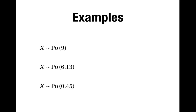Let's look at some examples to finish with. We can use the rules that we've worked out to answer these extremely easily. First, suppose that x has the Poisson distribution with parameter 9. This is a whole number, and when lambda is a whole number, we'll have a bimodal distribution where the modes are lambda minus 1 and lambda, so the two modes are 8 and 9. Secondly, suppose that x has the Poisson distribution with parameter 6.13. Since 6.13 is not a whole number, there'll be one mode, which is the greatest whole number less than 6.13, and that's 6. Finally, suppose that x has the Poisson distribution with parameter 0.45. We're looking for the greatest whole number that's less than 0.45, and that's 0.